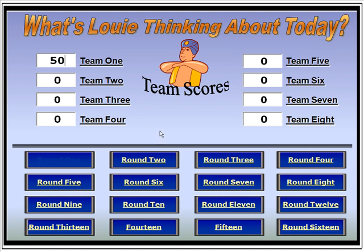When we go back to the board, team one will now have 50 points. We simply continue this process, giving each team a chance. You can have up to eight teams. There are 16 rounds, so each team could theoretically get two rounds each. After all teams have gone through or you've run out of questions, you can stop the game at that point.